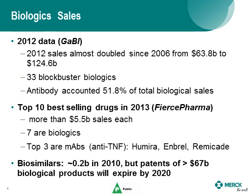Looking at recent data: back in 2012, the sales of biologicals almost doubled compared to 2006 and reached $124.6 billion. There are 33 blockbuster biologicals, and among them, antibodies account for more than half of the total biological sales. The top ten best-selling drugs in 2013 each had more than $5.5 billion in sales. The top three — Humira, Enbrel, and Remicade — are monoclonal antibodies and fusion proteins, all targeting TNF. By 2020, there are more than $67 billion in biological products pending with the FDA.